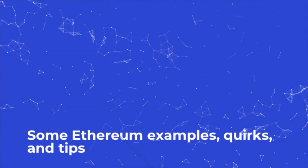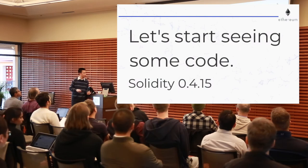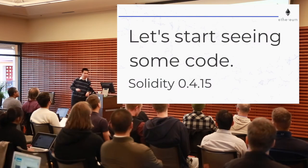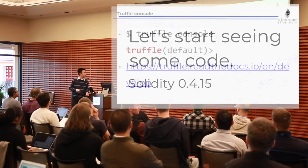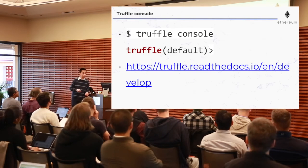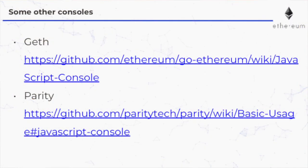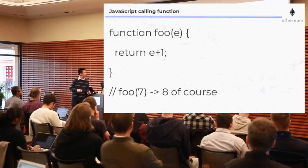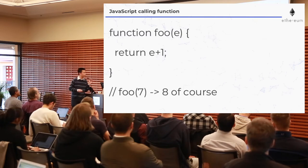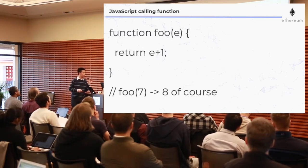Now let's see some code. This is about Solidity 0.4.15. We're going to pretend we're in a console — there's a Truffle console, and the other nodes also have consoles: Geth has a console, Parity has a console. In JavaScript, here's a very simple function: foo(e), return e + 1. If you call foo(7), you get eight.